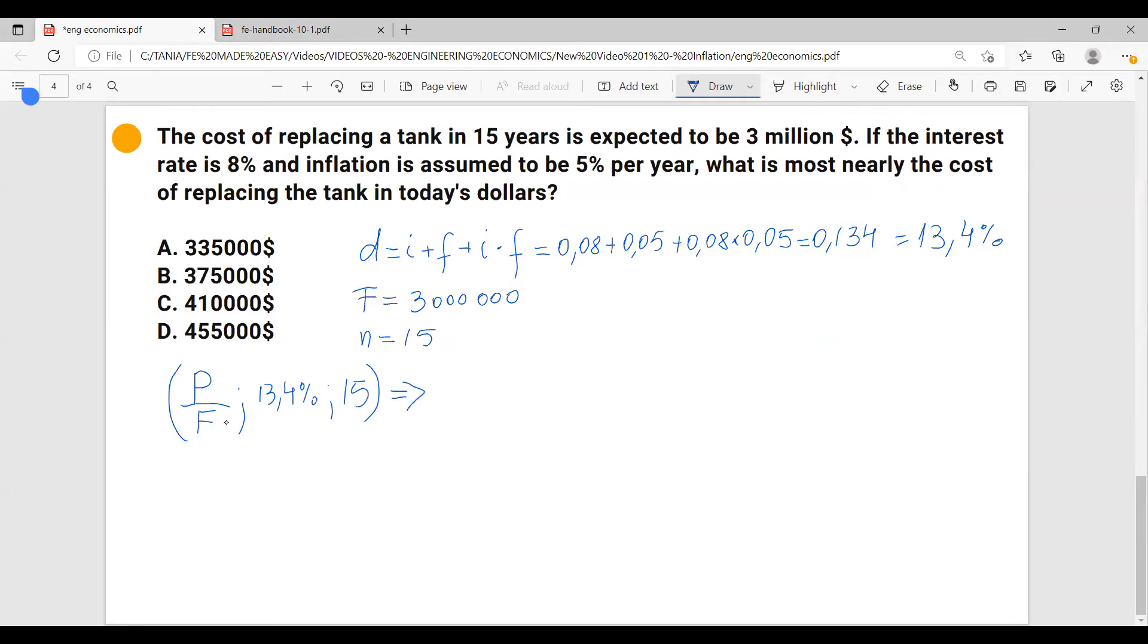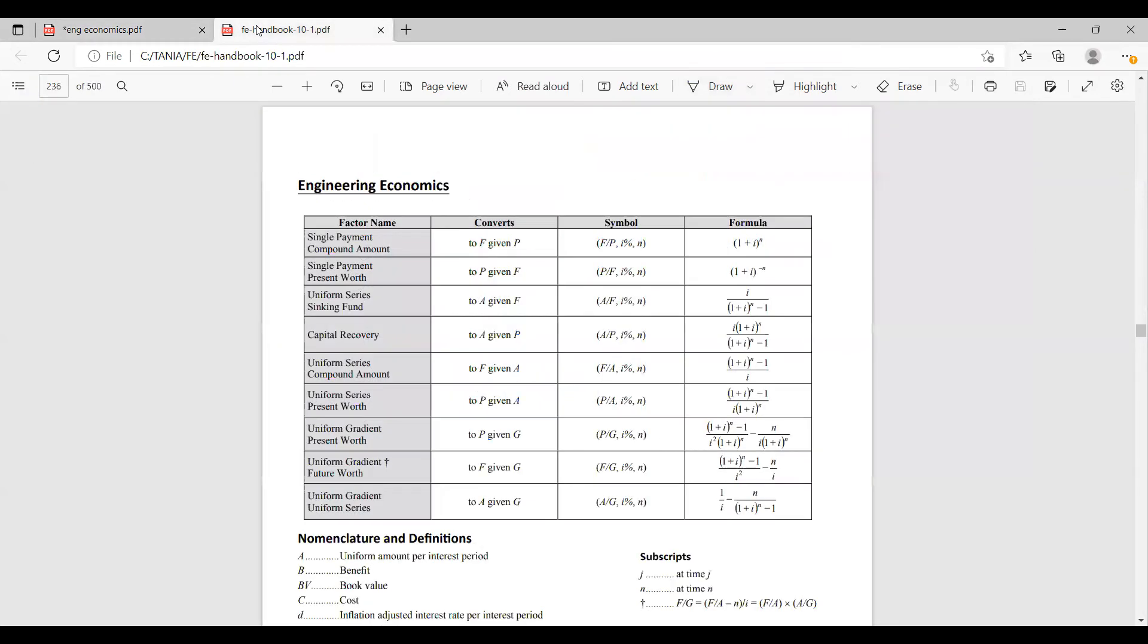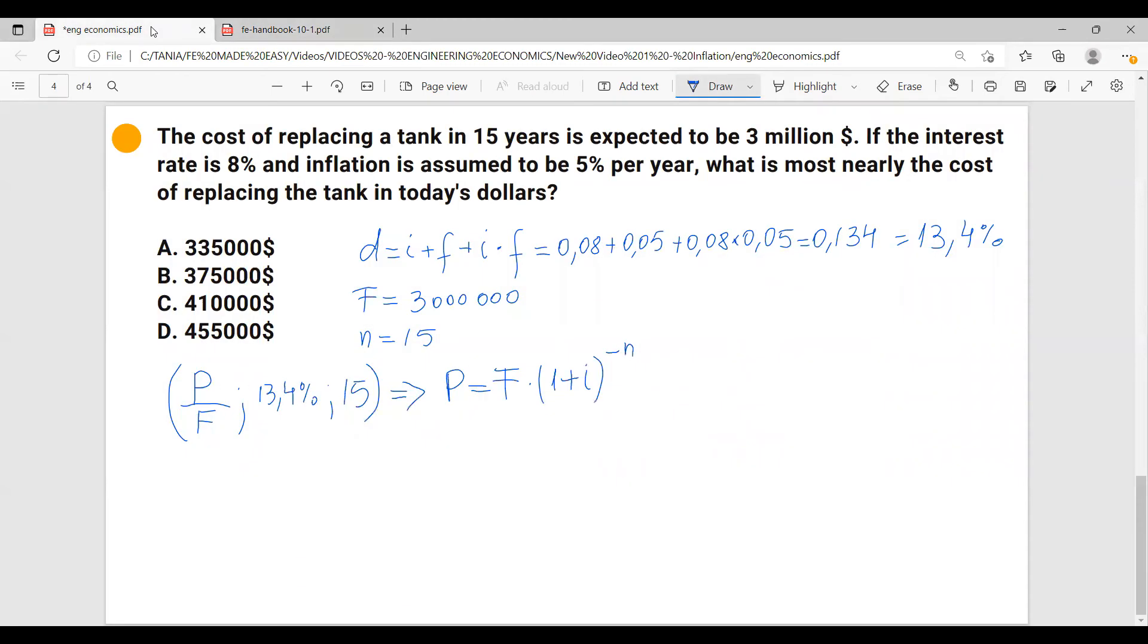So here results that present amount equals to the future amount times the formula we just saw, which was 1 plus i power minus n. But our i is actually the d so I'm going to put d here. This means 3 million dollars multiplied by 1 plus 0.134 power minus 15 equals $454,909.96.